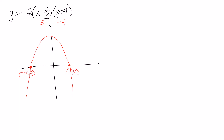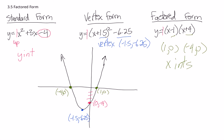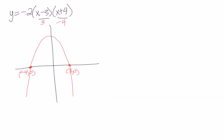So comparing all three forms: standard form gives you the y-intercept, vertex form gives you the vertex, and factored form gives you the x-intercepts. Each is useful in its own way, but none gives you the whole picture. Depending on the question, one form will be better than another. The key rule with factored form: always do the opposite of whatever is in the brackets.